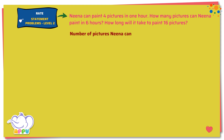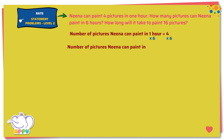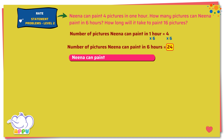The number of pictures Nina can paint in 1 hour equals 4. To find the number of pictures Nina can paint in 6 hours, we multiply both sides by 6. 6 times 1 hour equals 6 hours, and 4 times 6 equals 24. So Nina can paint 24 pictures in 6 hours. This answers the first part of the question.